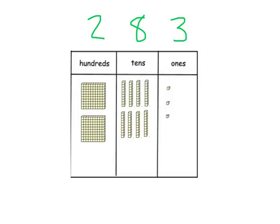Let's remember a couple things about place value from last year. In any number — this number is 283 — there are digits, and the digits are in certain place values. Those place values determine what each digit is worth, or its value. The value is what the digit is worth in a number.